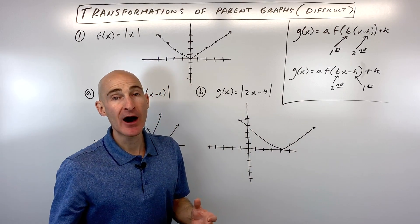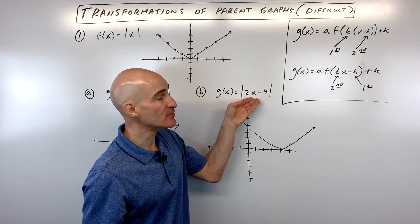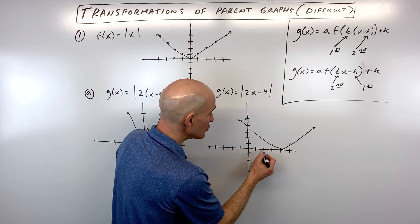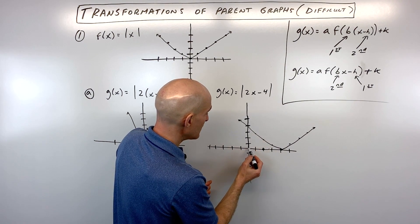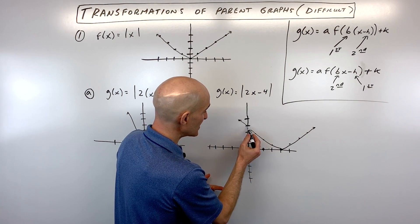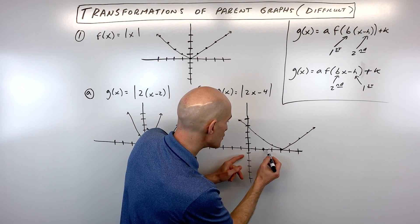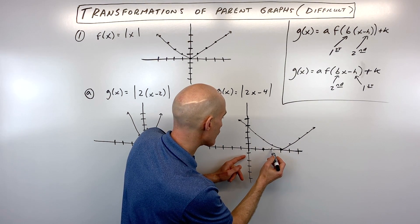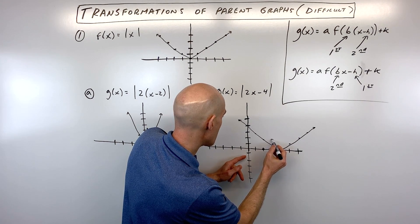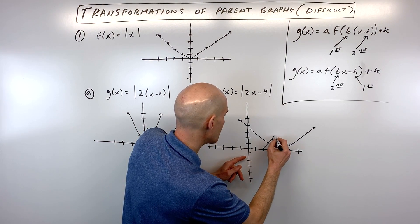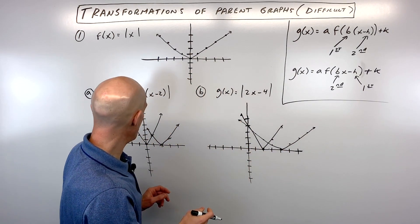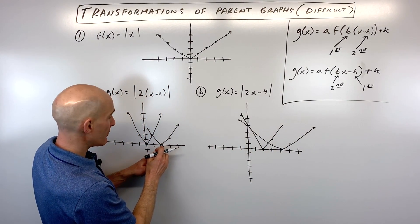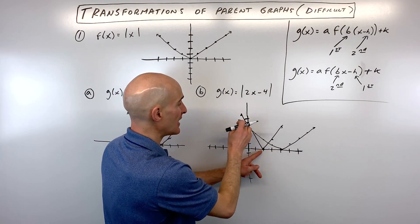Now we take the 2 into account — remember it has the opposite effect, so instead of multiplying x-values by 2 we divide the x-coordinates by 2. The vertex that was at x = 4 is now at x = 2. The point at x = 0 stays at 0. A point like (6, 2) becomes (3, 2). The resulting graph is identical to Example A — the vertex is at 2 and it rises at the same rate.